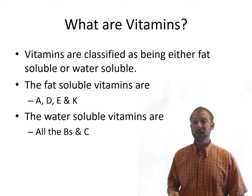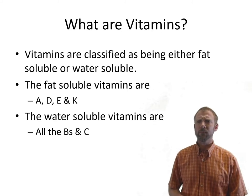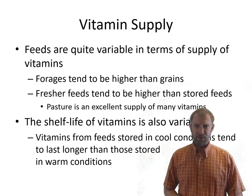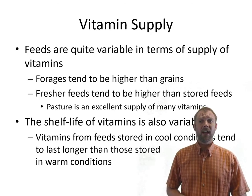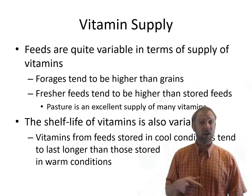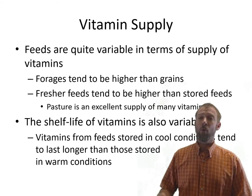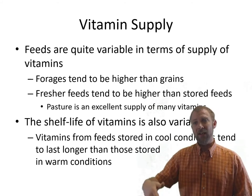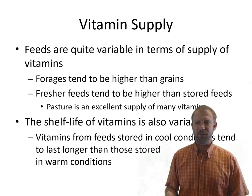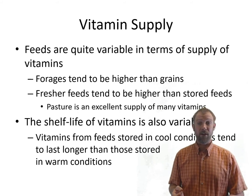If you catch that thiamine deficiency soon enough, a shot of thiamine will correct it fairly quickly. But if it goes on too long, it can cause permanent blindness in the animal. Vitamin content in feeds is very variable — forages tend to be higher than grains, and fresher feeds are higher than stored feeds. Pasture is an excellent source of many vitamins, but once you cut and dry it, those vitamins — sometimes called friable — deteriorate relatively quickly.